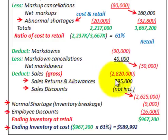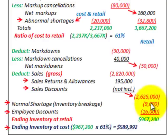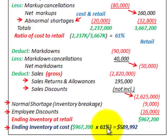Sales returns and allowances affect retail price only, not cost. Sales discounts are not included in price or cost. Normal shortage (inventory breakage) reduces only the retail price. Employee discounts also reduce only the retail price. Neither normal shortages nor employee discounts affect the cost amount. Finally, ending inventory at cost equals ending inventory at retail multiplied by the cost-to-retail ratio.